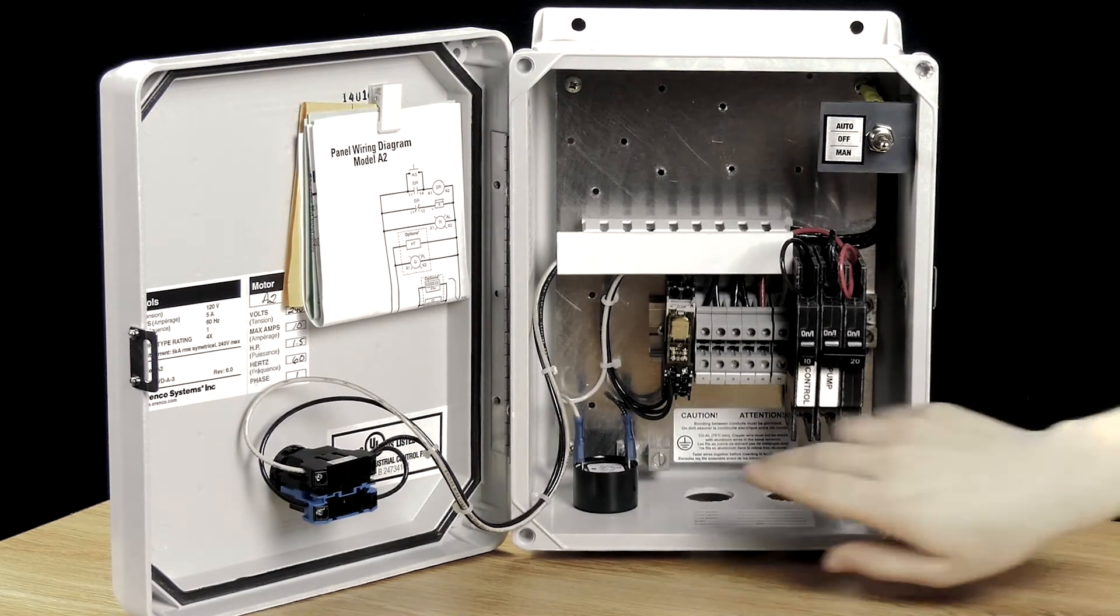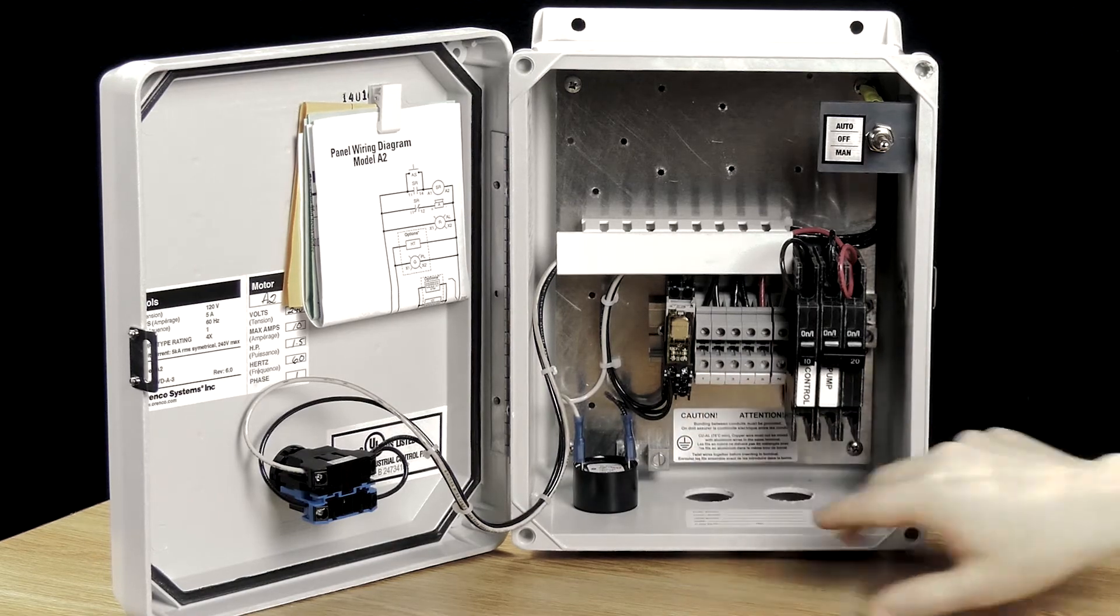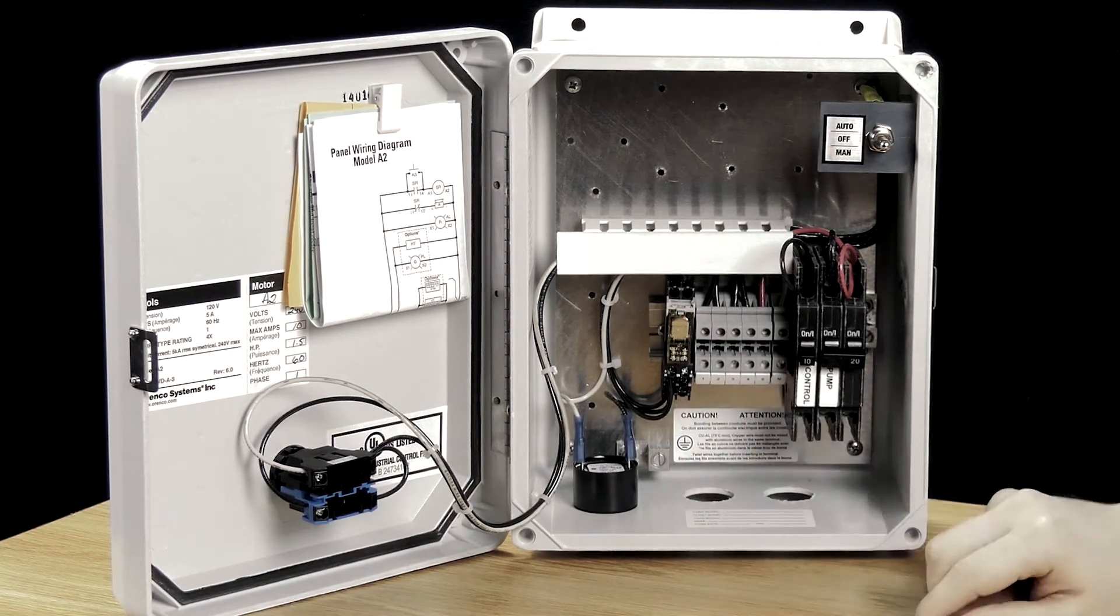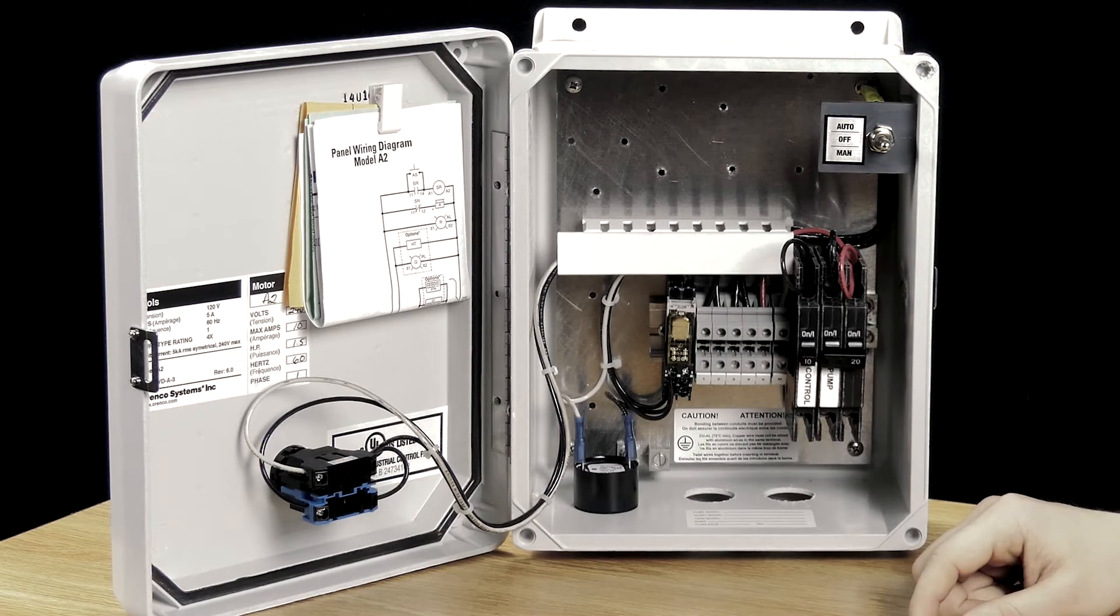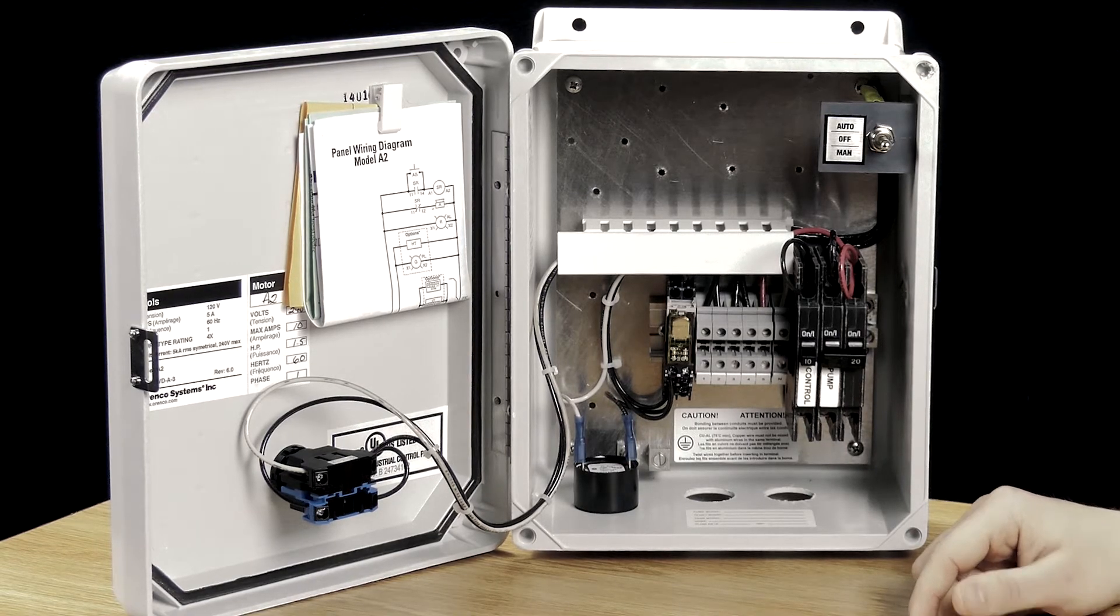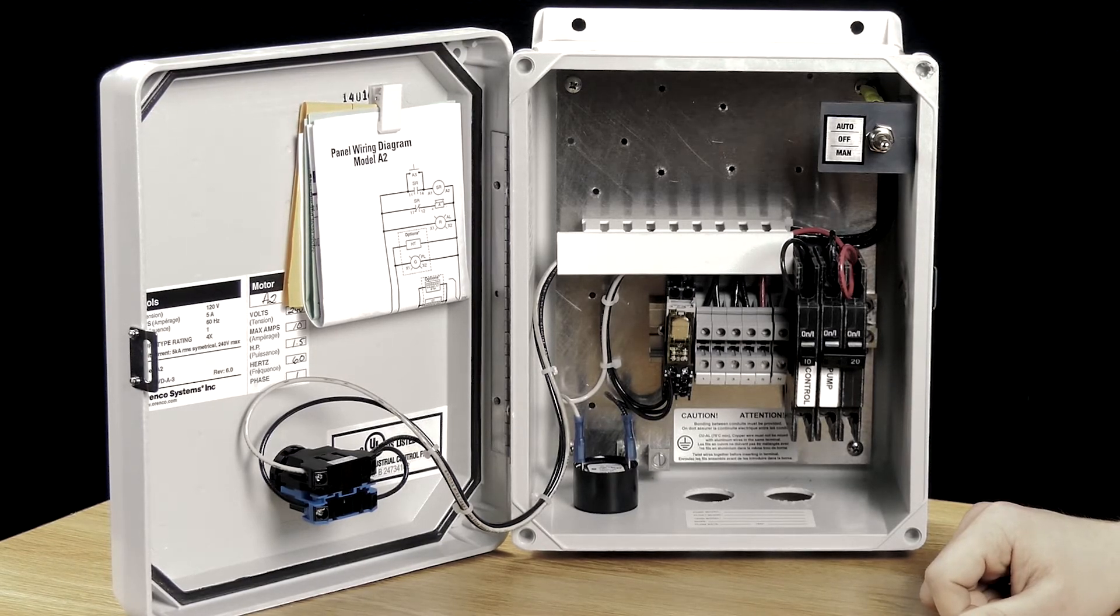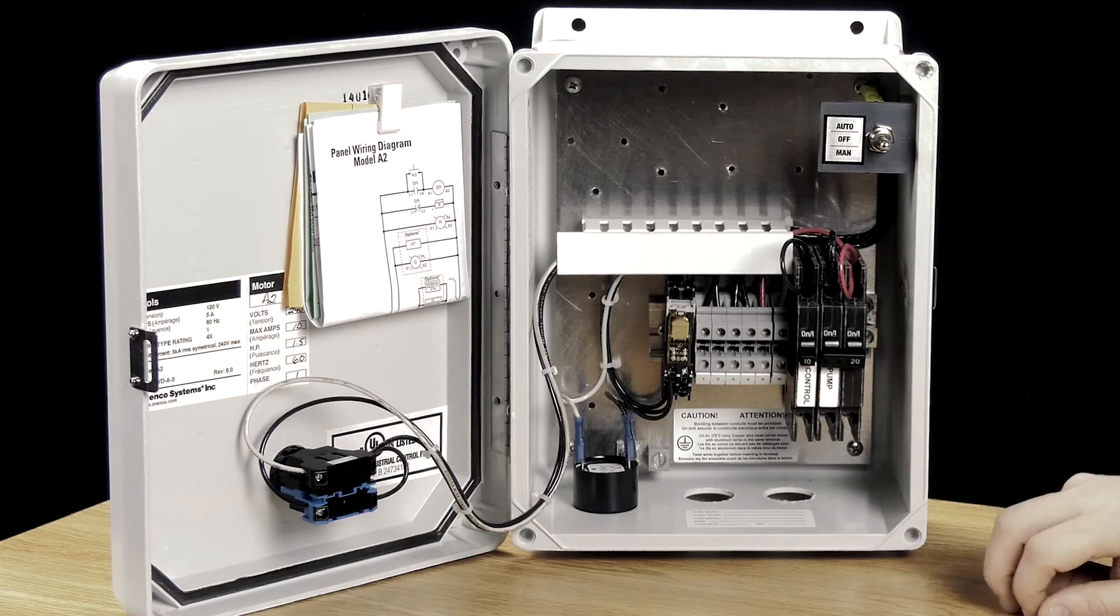What we've also got inside of this panel is the terminal strip, which is conveniently numbered 1, 2, 3, 4, 5, and N in there. It makes it nice and easy when you have to install your floats and configure your floats based on the application configuration.